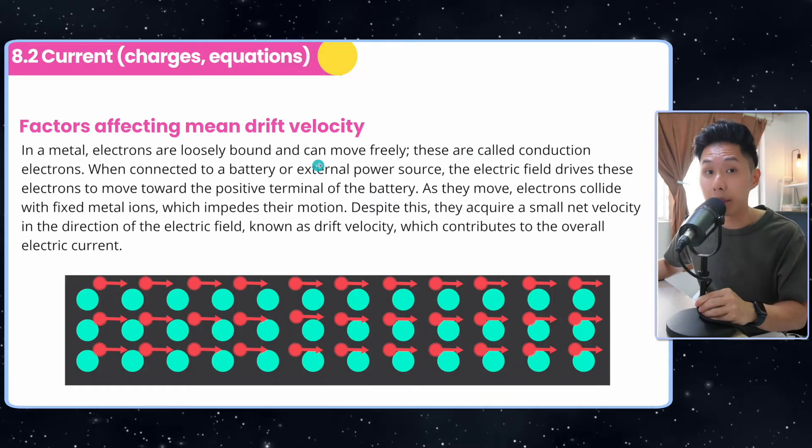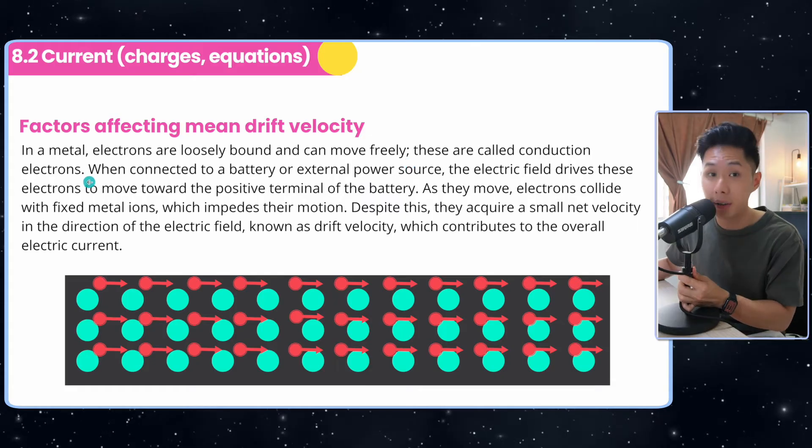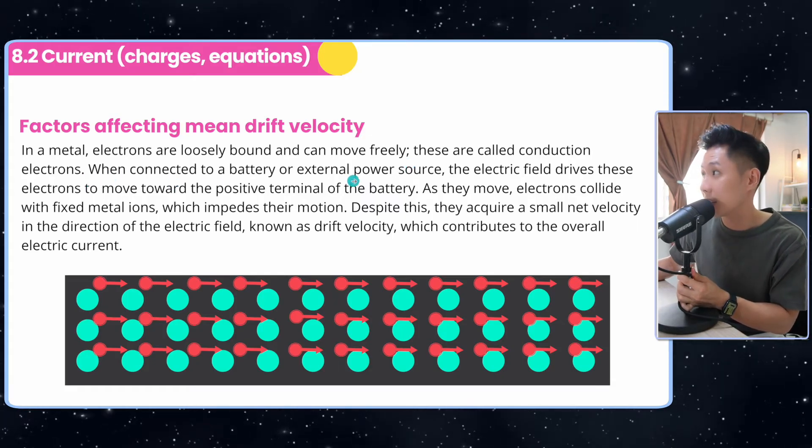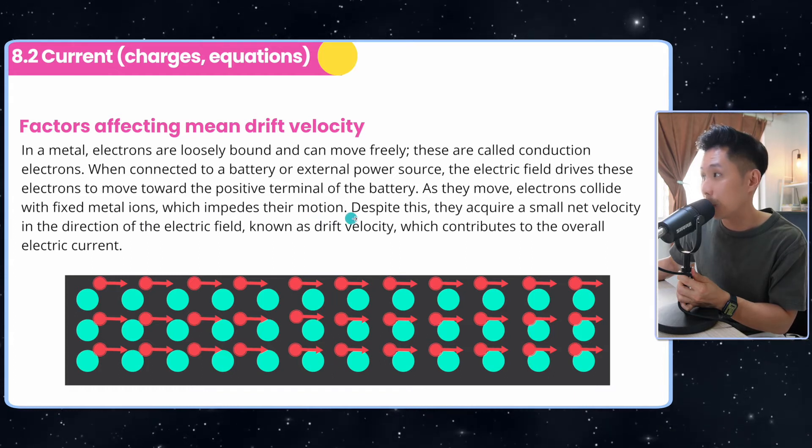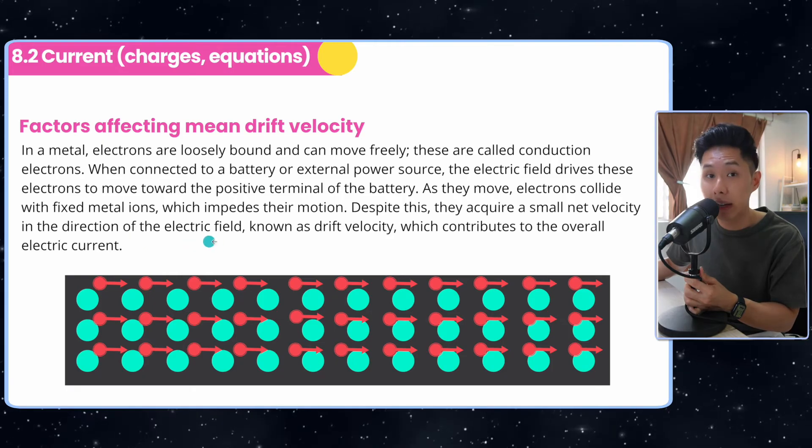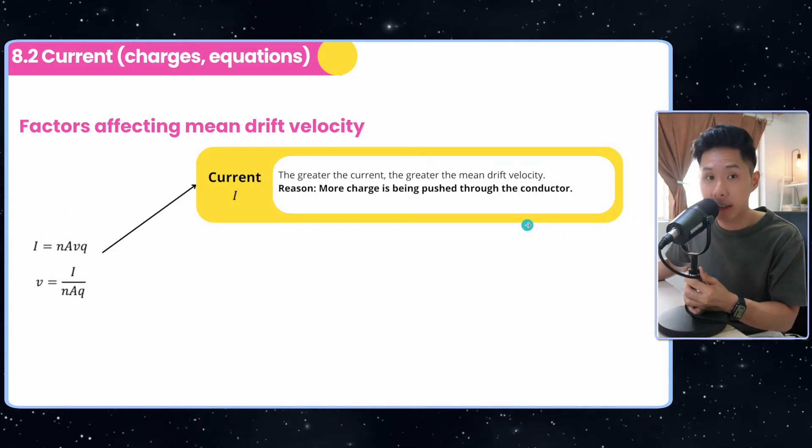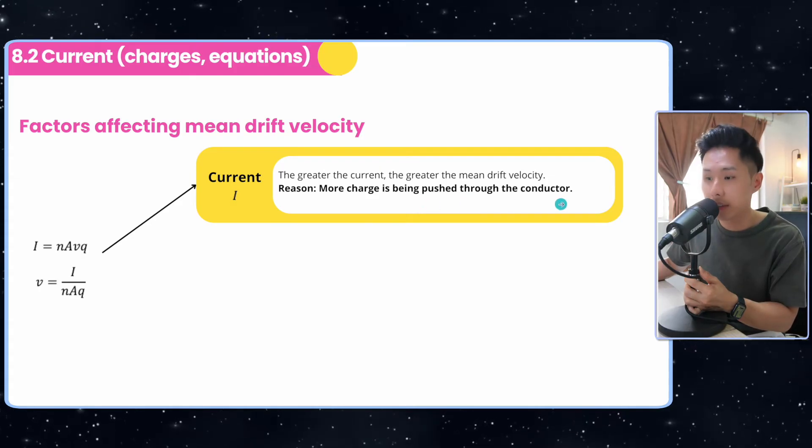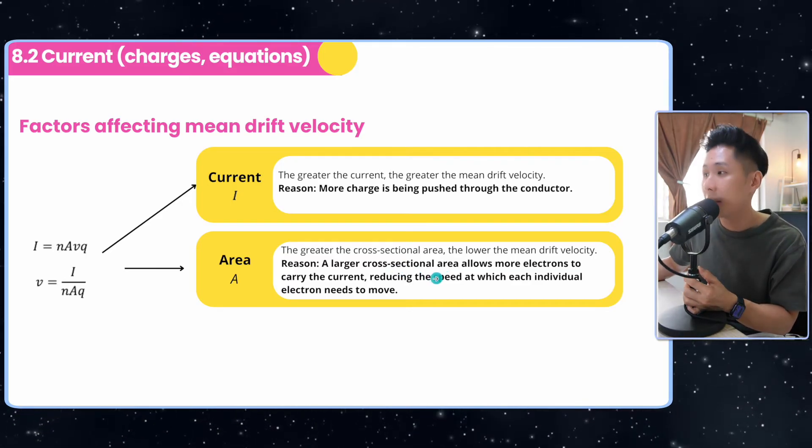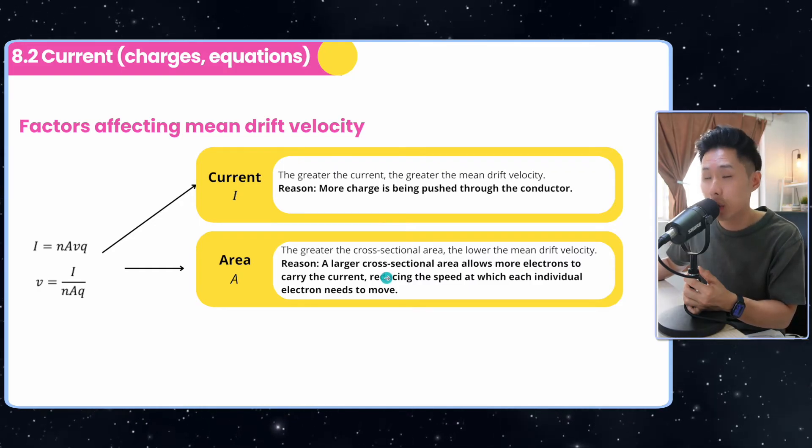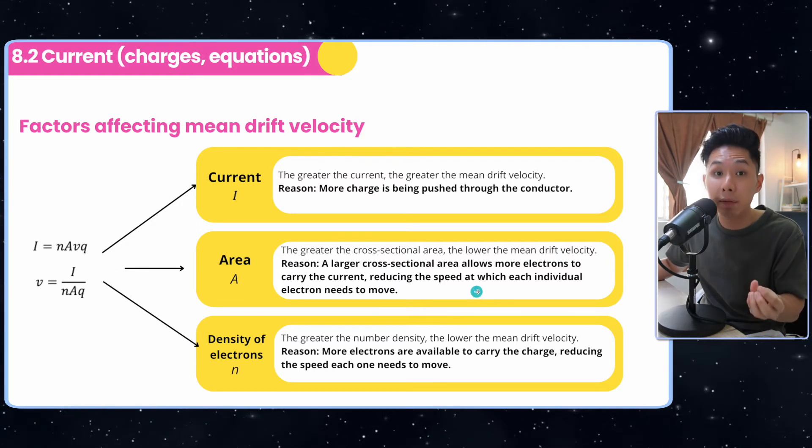Now let's look into some factors that will affect mean drift velocity. But what exactly is mean drift velocity? So initially, electrons are loosely bound, and they can move around. They call it conduction electrons. But when we connect a cell to the circuit, the electric field will drive these electrons to move around. And as they move, they collide with fixed metal ions, which impedes their motion. And despite this, they acquire a small net velocity in the direction of electric field, which contributes to the overall electric current. So there are a few factors that could affect how fast they can move. And the first one is current. The more current you have, meaning more charge is being pushed through the conductor, the mean drift velocity will be faster. And the area will also affect it. A larger cross-sectional area means that there are more electrons per unit volume, meaning each electron doesn't have to move that much. So density is the same. The higher the density, the lower the mean drift velocity, because if there are more electrons to carry the charge, the electrons doesn't really have to move that fast.